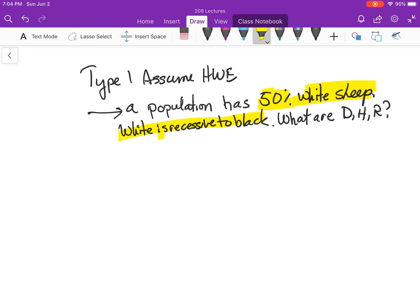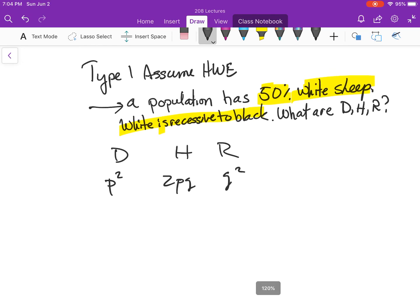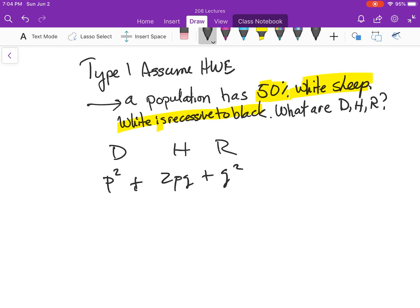So what we're trying to solve for is D, H, and R. I'm going to write a few things out for you. D, H, R. We know that D is P squared, H is 2PQ, and R is Q squared. And we know these all add up to 1. Well, that kind of makes sense. And these add to 1.